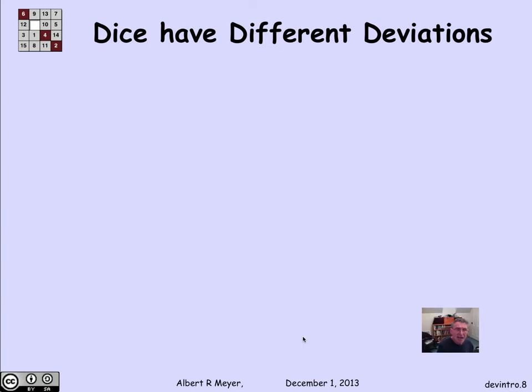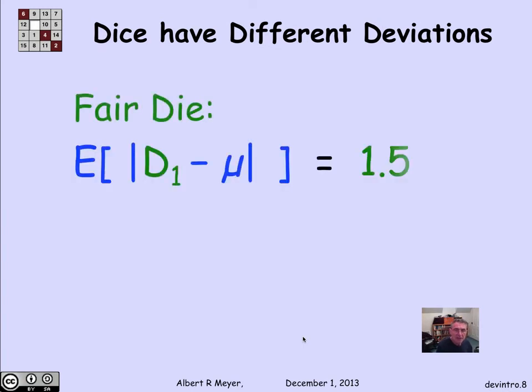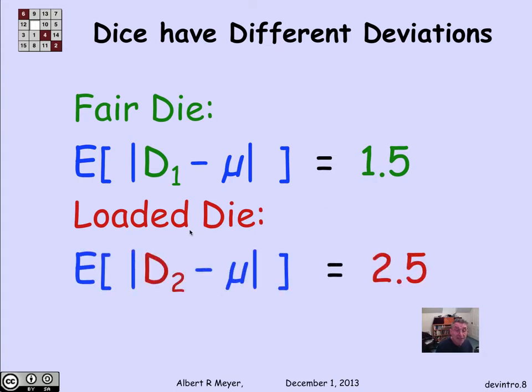So how do I capture the difference? Well, if I look at the expected distance of the fair die to its mean, I claim it's 1 and 1 half. But the expected distance of the loaded die from its mean, same mean remember, 3 and 1 half is actually 2 and 1 half. In fact, the second die is always exactly 2 and 1 half from its expected value.